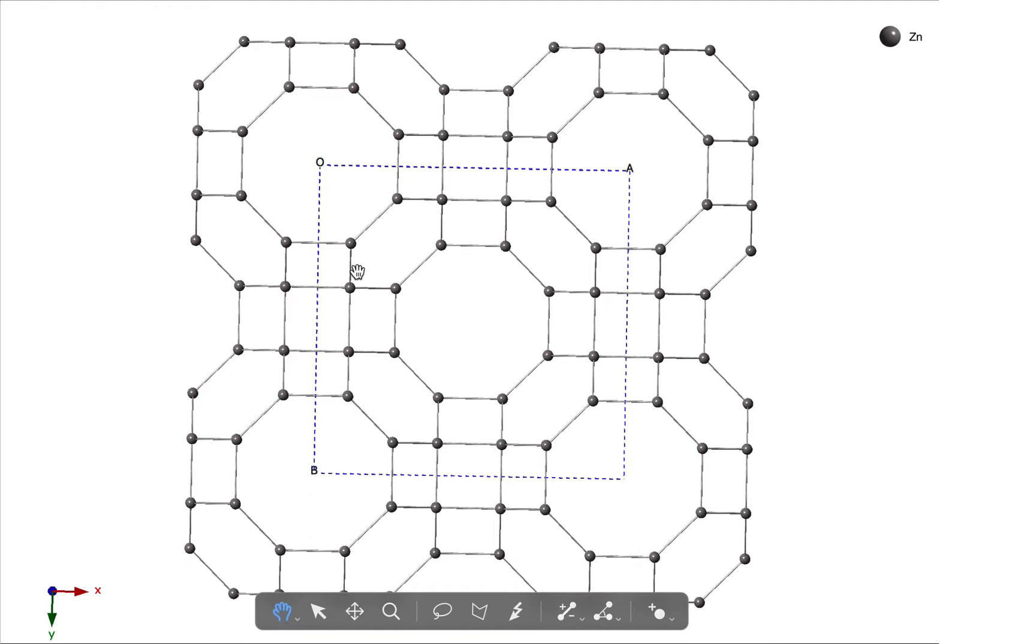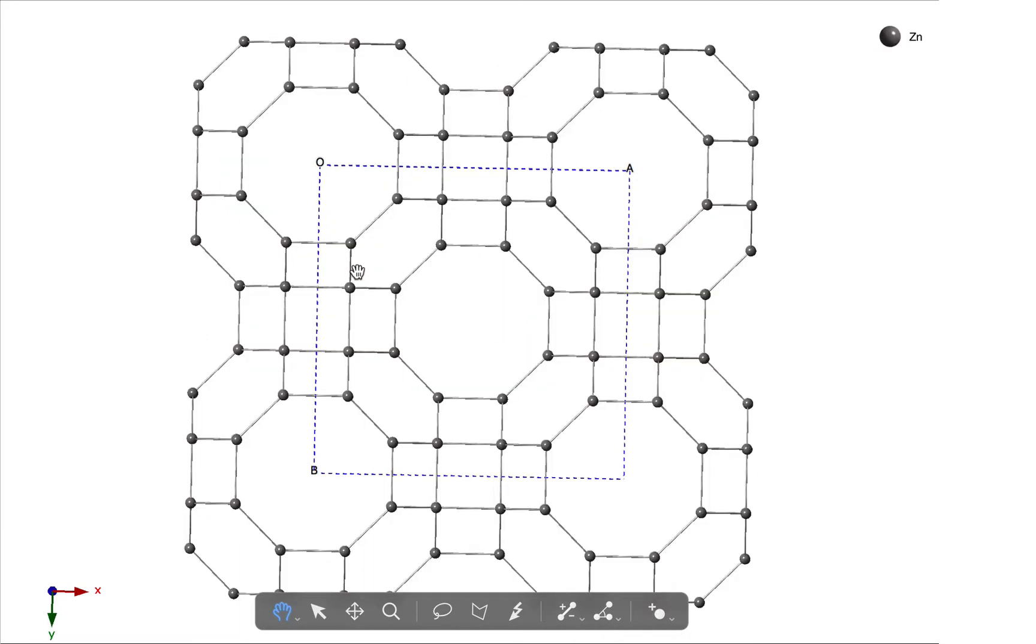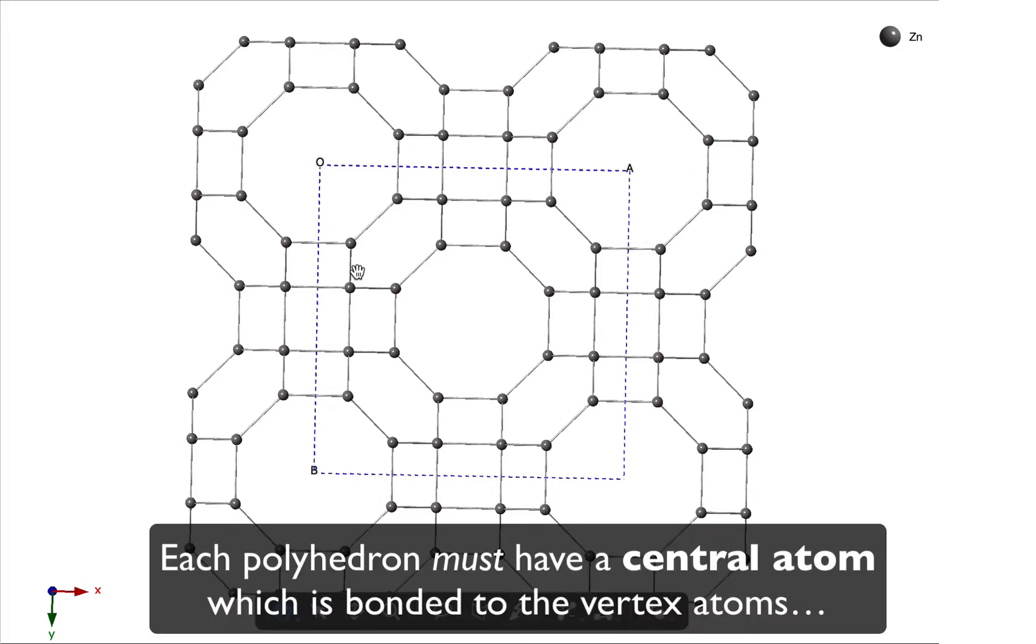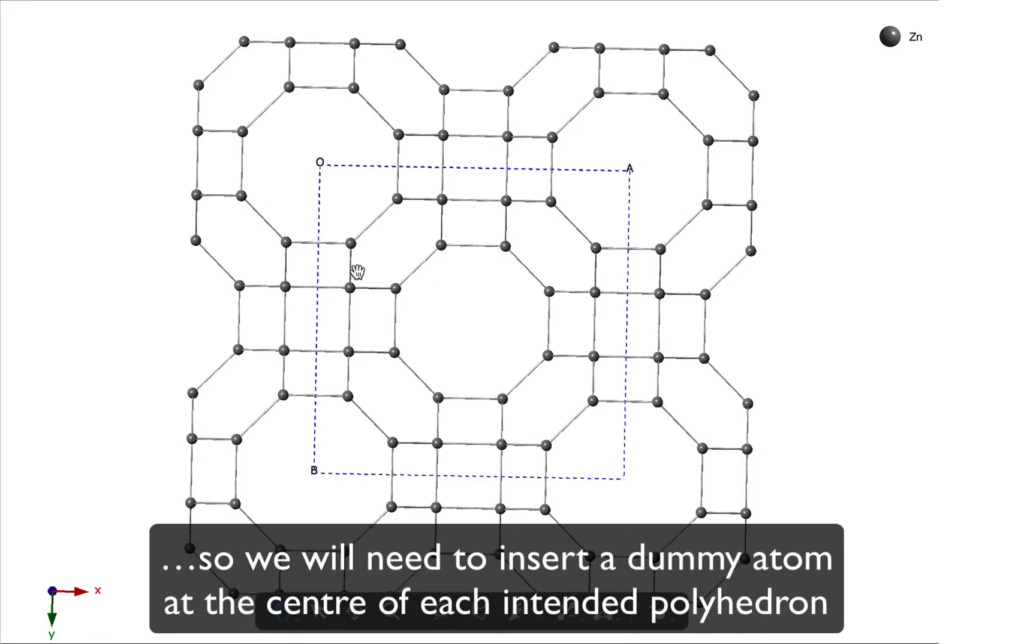Now we can't do that automatically. If we try and switch to a polyhedral plot, we just get a bit of a mess. The reason we can't do this is because CrystalMaker requires that each polyhedron have an atom in the center that is bonded to vertex atoms, the corners of the intended polyhedra. So we need to put a dummy atom in the center of the cages that we want to represent as polyhedra.